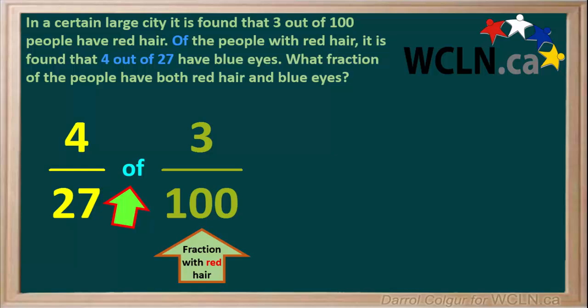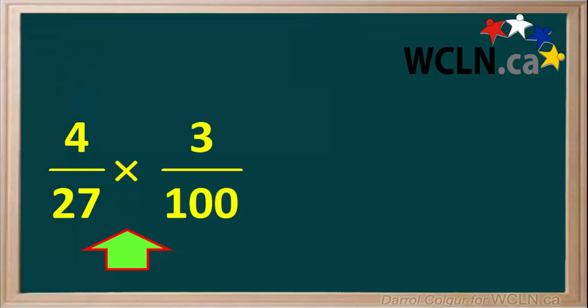When the word of is between two fractions, it means times. So the of can be replaced by a multiplication sign. So this means we're multiplying the fractions 4 27ths times 3 100ths.